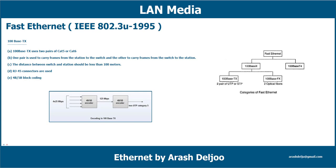For IEEE 802.3 100Base-T4, this requires four pairs of UTP category 3, 4, or 5. For 100Base-TX, you can use Cat5 or Cat6 — only two pairs are needed. But if you don't want to upgrade the cabling, you can use 100Base-T4 with Cat3, 4, 5, or 6. With Cat3 or Cat4, you need all four pairs.